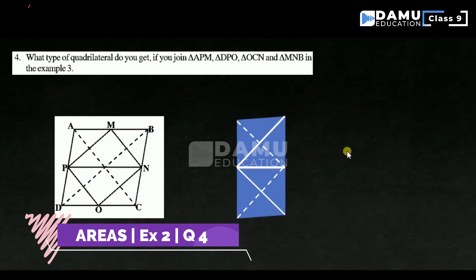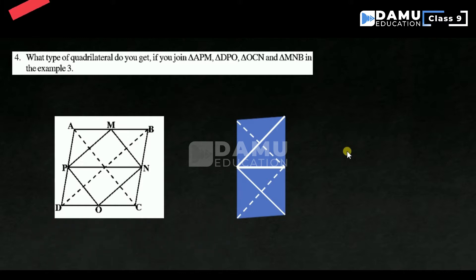In this module, we are going to discuss our fourth question. What type of quadrilateral do you get if you join triangle APM and triangle DPO, triangle OCN and triangle MNB in example 3?